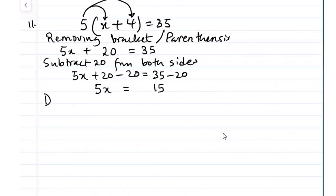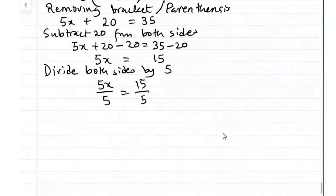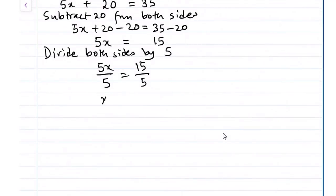To determine the value of our variable, we're going to say divide both sides by the coefficient standing by that variable that happens to be 5. So we have 5x over 5 and 15 over 5. So if we solve further, the 5 will cancel out and then 5 will go in 15 three times. You can check the value of x in the equation and you will see what it's going to give you.